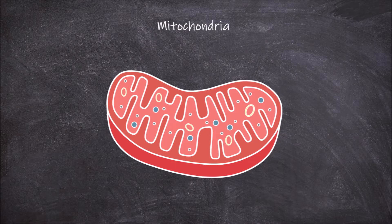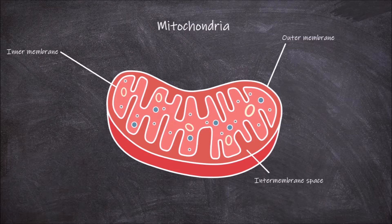Mitochondria are double membraned. They have both an outer membrane and an inner membrane with an intermembrane space between them. The outer membrane is the outermost membrane which encloses the mitochondria. It is a selectively permeable membrane and is made up of a phospholipid bilayer.